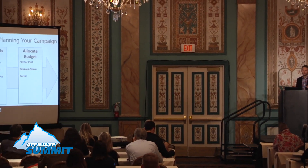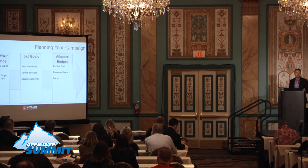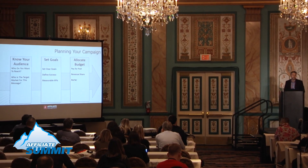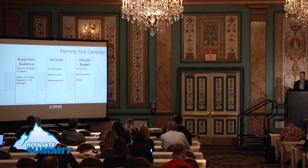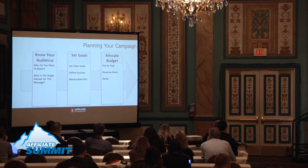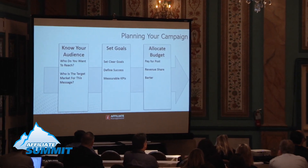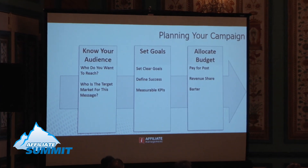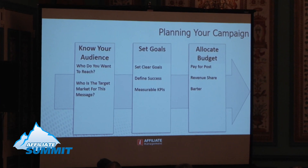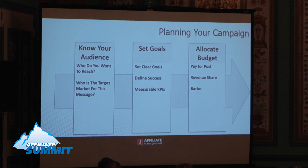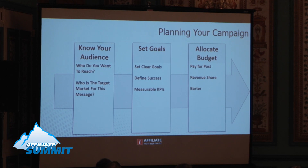The first step in running a successful influencer marketing campaign is to plan your campaign. The old adage 'fail to plan, plan to fail' definitely applies here. The first step in planning is knowing your audience. If you're an agency, that means asking your client what their audience is — questions like who do you want to reach, and who's the target market for this message? A good example is an influencer campaign we ran with a meal delivery subscription service.